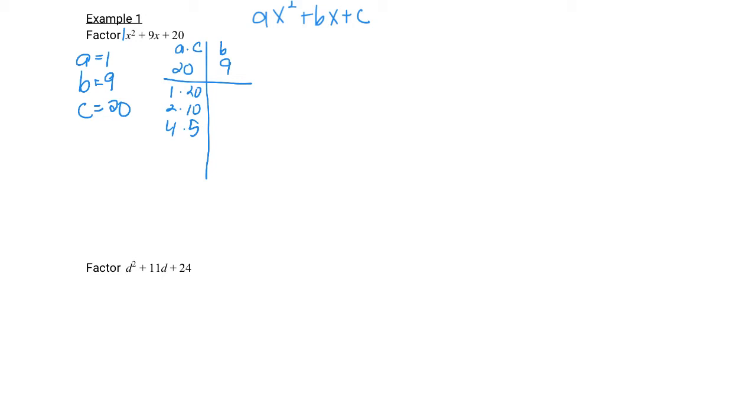On the right, under the b column, you're going to add all those factors together. 1 plus 20 is 21, 2 plus 10 is 12, 4 plus 5 is 9. So the factors that we care about are the ones that add up to b. So in this case, it's 4 times 5.